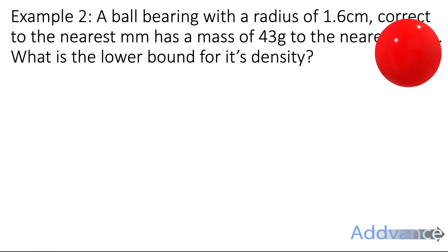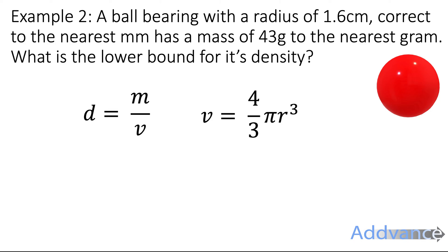Question two. A ball bearing with a radius of 1.6 centimetres, correct to the nearest millimetre, has a mass of 43 grams to the nearest gram. What is the lower bound for its density? We're going to need two equations for this, two formulas. One is the equation for density, which is mass divided by volume. You should know that from maths and physics as well. And then the volume of a sphere is given to you in the GCSE formula booklet: that's four-thirds pi r cubed.